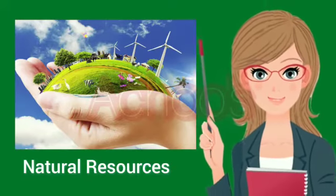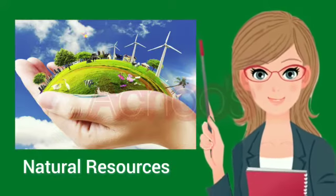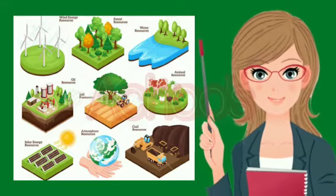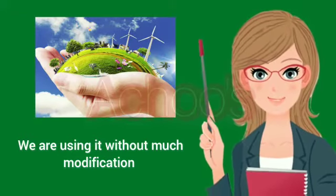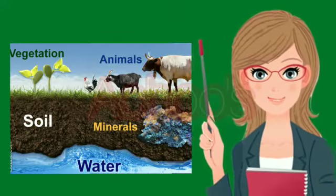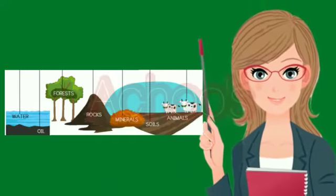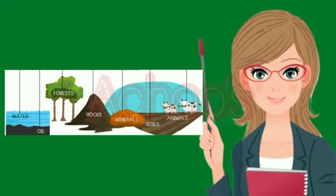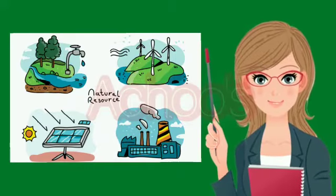Natural resources — what are these? As the name suggests, these are the materials that we get directly from nature and we are using them without much modification. For example, we get air, water, minerals, soils and land from nature and without doing any modification, we use them as they are to fulfill our day-to-day needs.